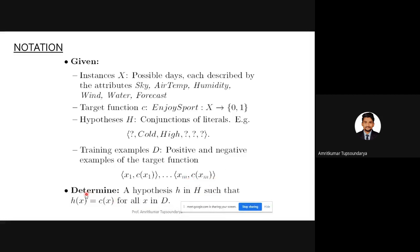Sky can be sunny, cloudy, or rainy. Air temperature can be warm or cold. Humidity can be normal or high. Wind can be strong or weak. Water can be warm or cool. Forecast can be same or change. These are the possible values for the six attributes.